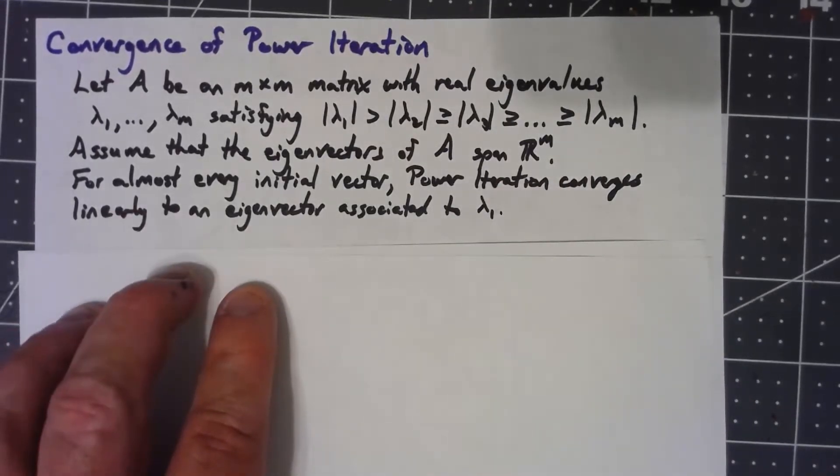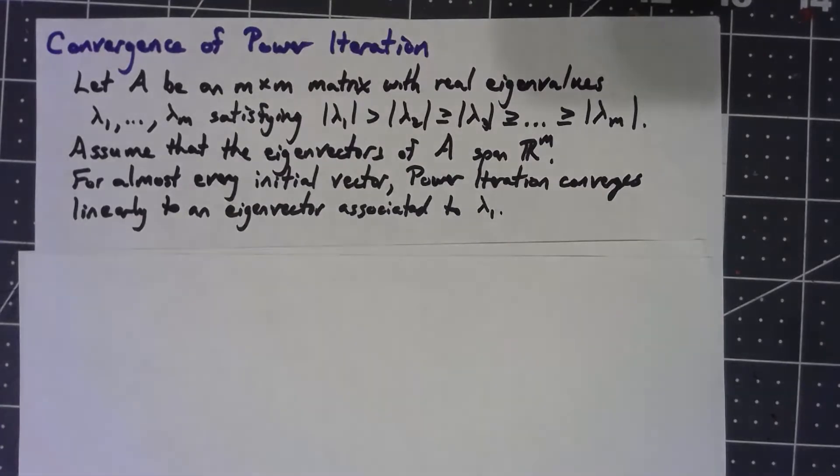The big assumption here is that the eigenvectors of A have to span all of R^m. We have to have a basis of eigenvectors. That's a common occurrence; it's very common to get a basis of eigenvectors, and in fact if your eigenvalues are all distinct that'll always happen.